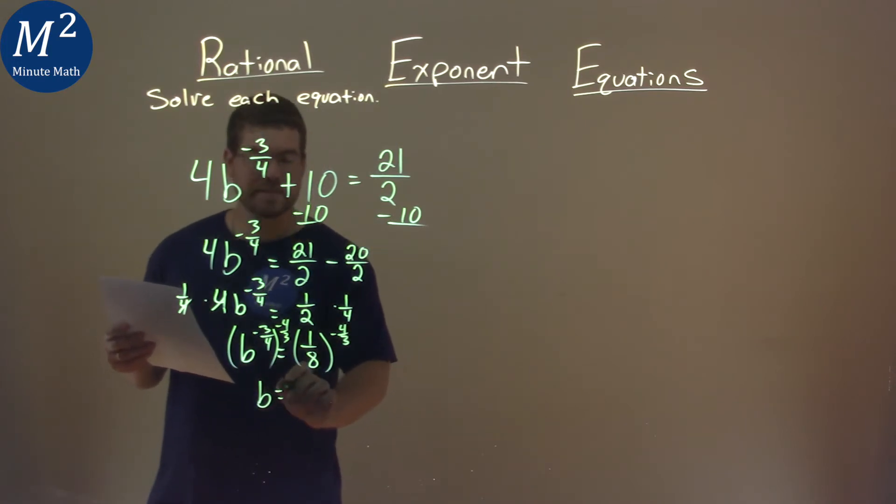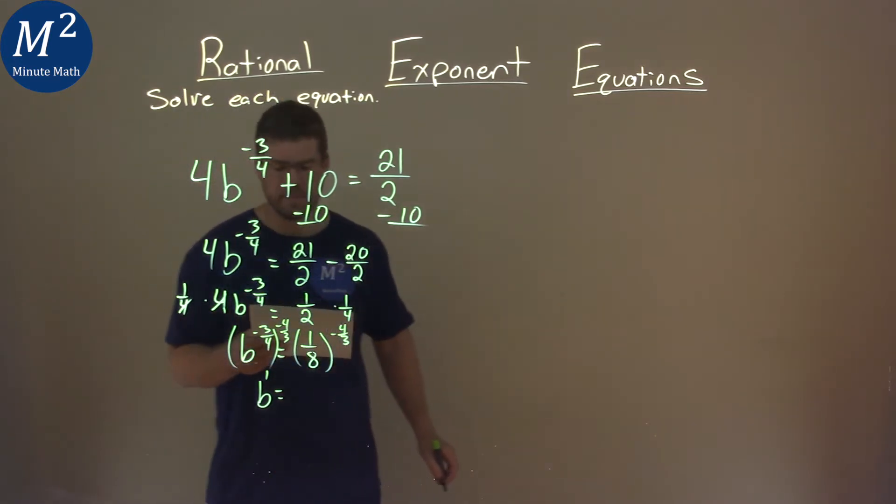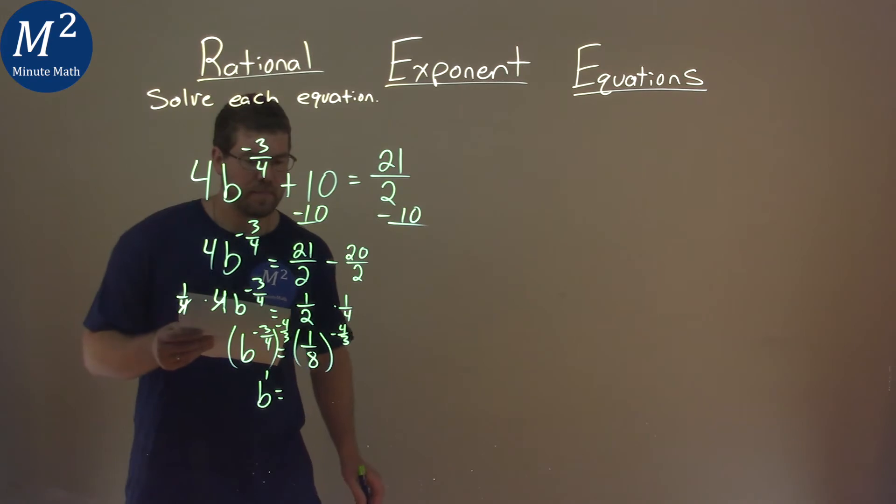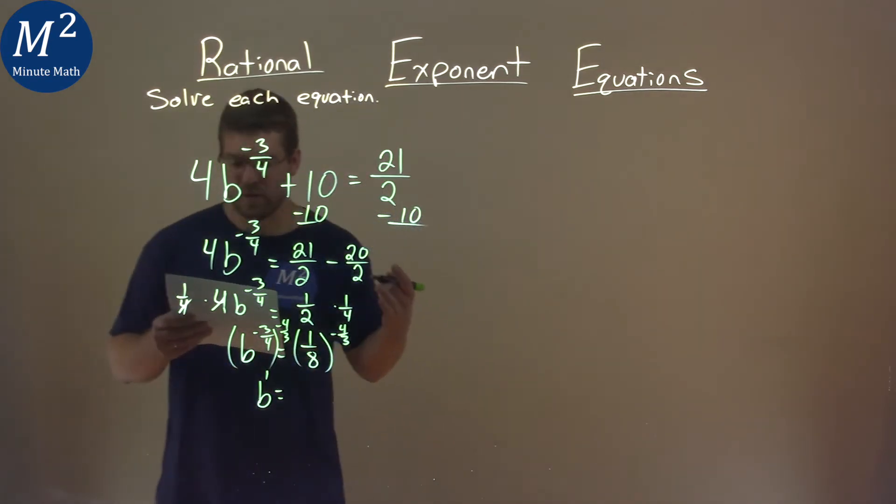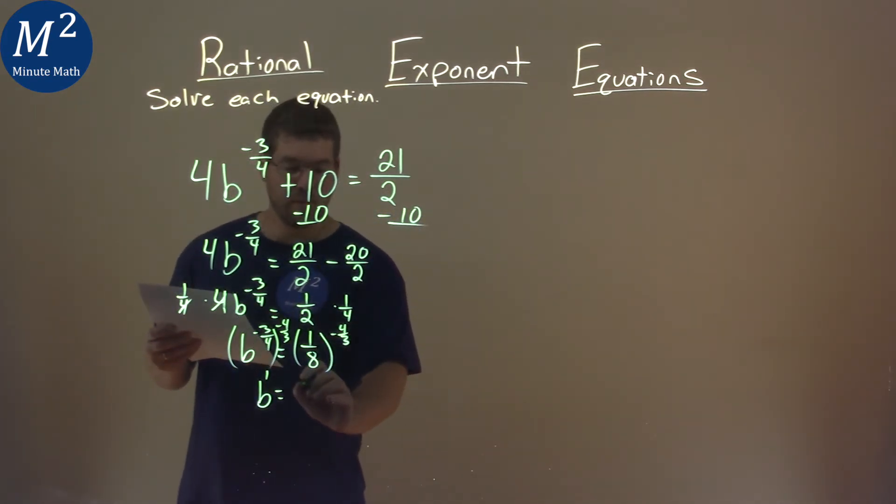b now is by itself because the negative 3 fourths power to the negative 4 thirds power, we multiply the exponents, it becomes a positive 1. Now here's the tricky part: 1 eighth to the negative 4 thirds power. That's the same thing as the third root of 1 eighth all to the negative 4th power. So let's continue this up here.